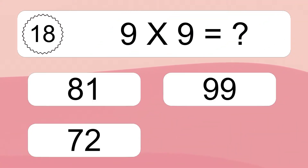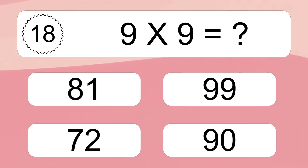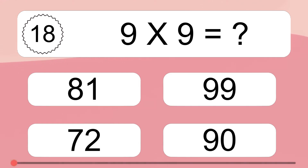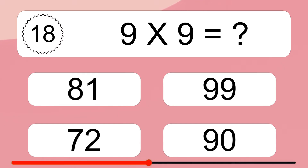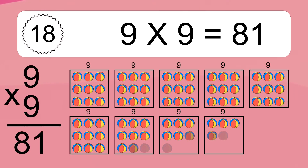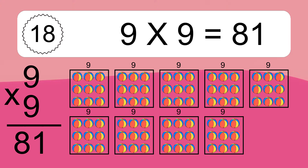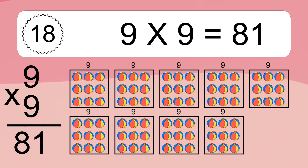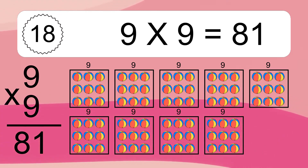9 times 9 equals what? 9 times 9 equals 81. We have 9 boxes, and each box has 9 colorful balls inside. If you count all the balls in all the boxes together, you will have 9 times 9 balls. This equals 81 balls.